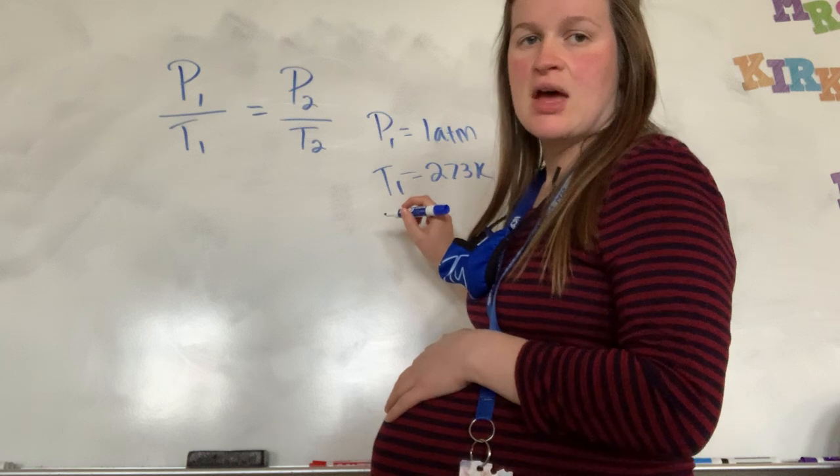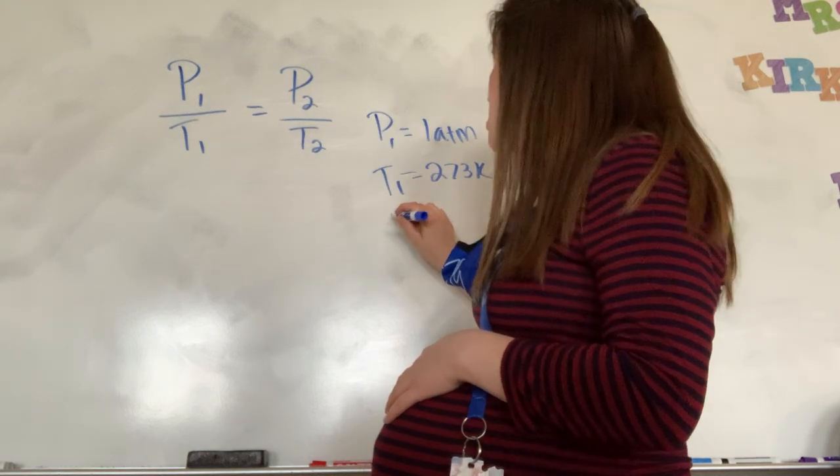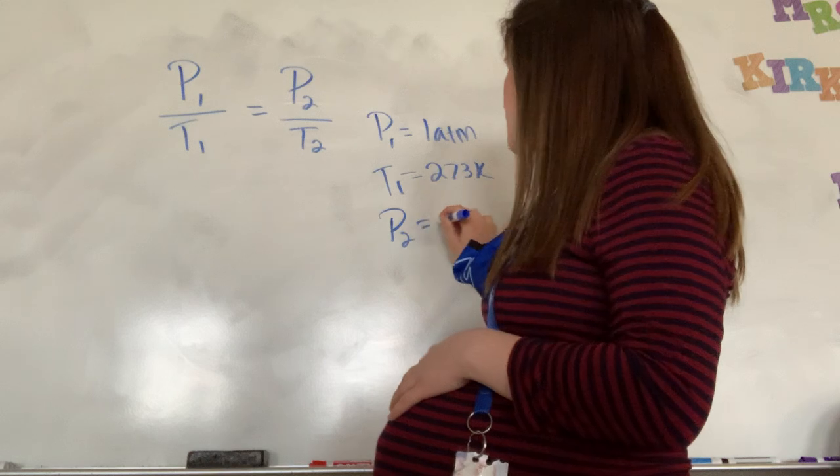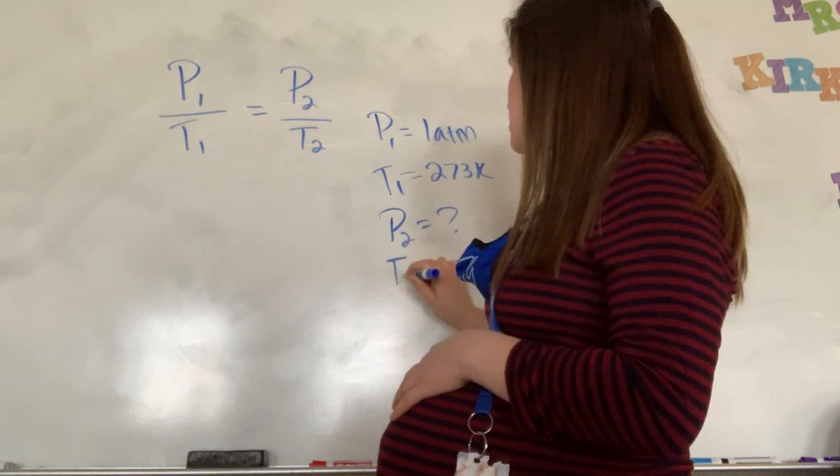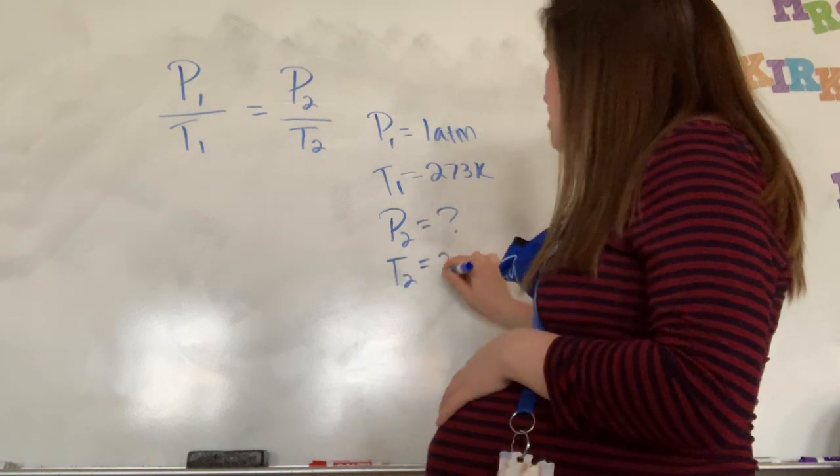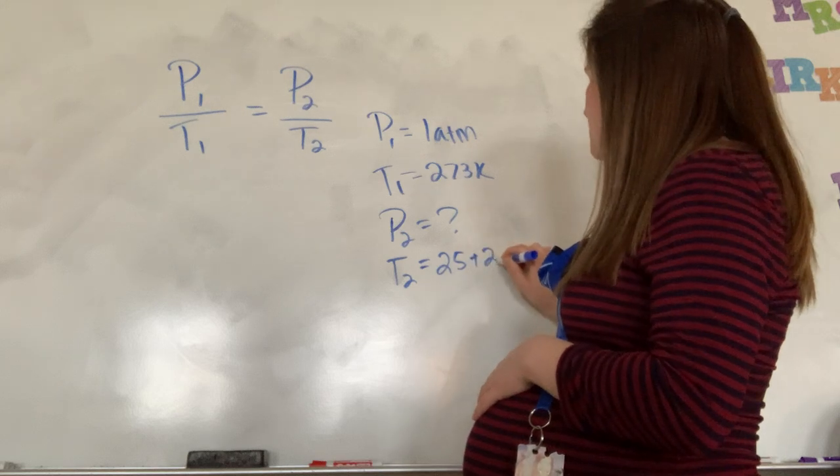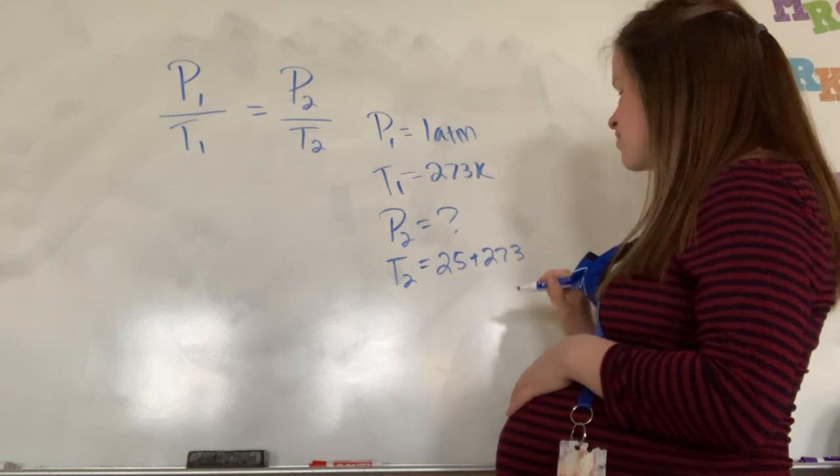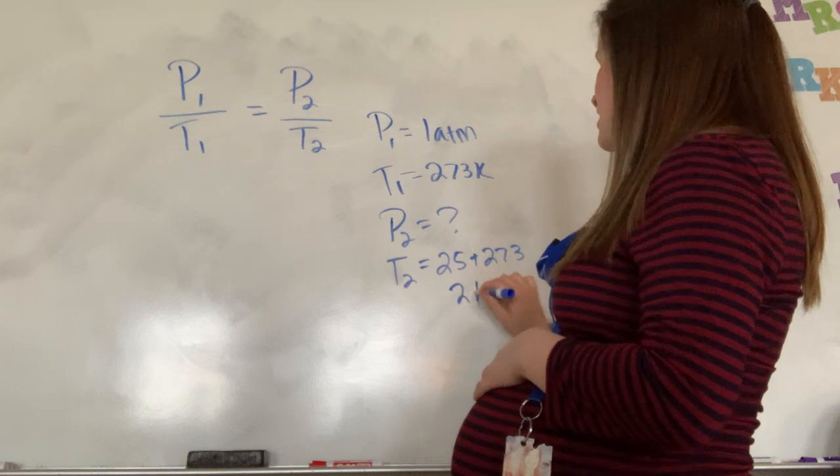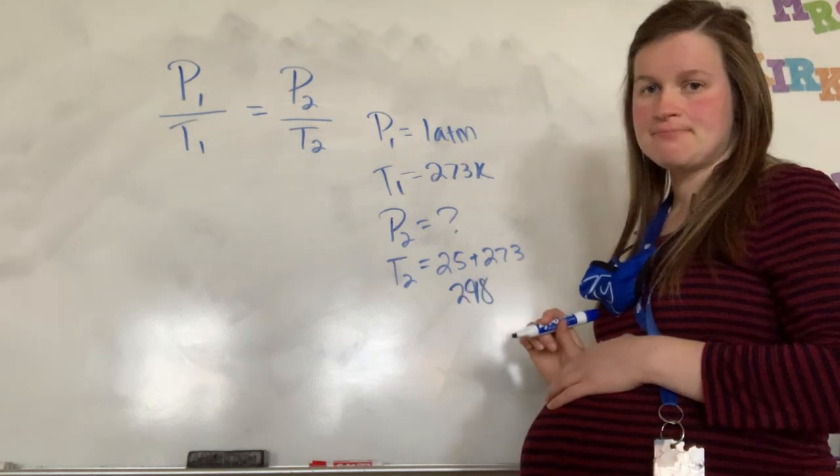And then it asks me when the temperature increases to 25 degrees Celsius. So I'm looking for my pressure when my temperature increases to 25 degrees Celsius. So that's 25 plus 273 so we can figure out what that is in Kelvin. And so in that case it's going to be 298.